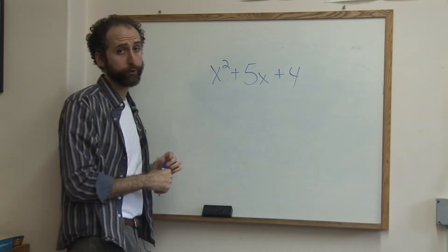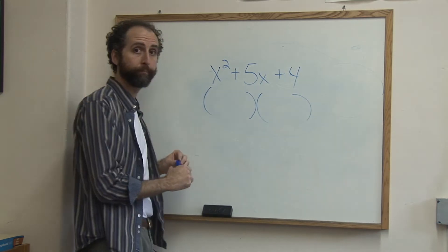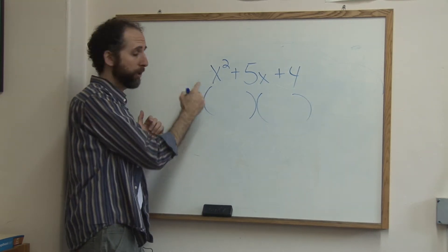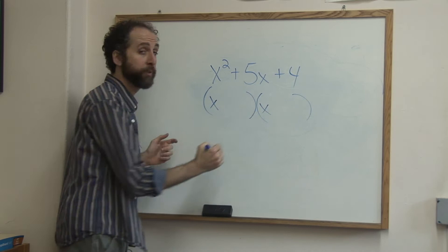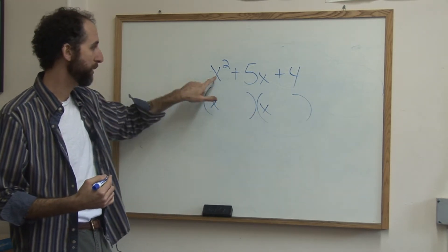Whenever you factor a trinomial in school, you're always going to get two parts. When there's no number in front of the x squared, you're always going to have x and x here. That's because x times x is x squared, and these two terms multiply to be that.